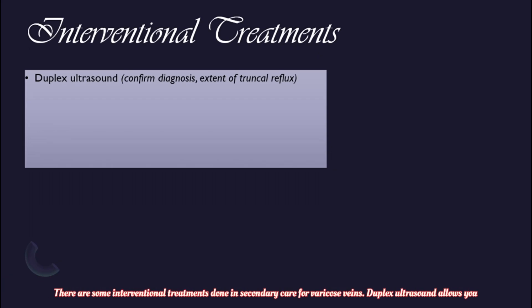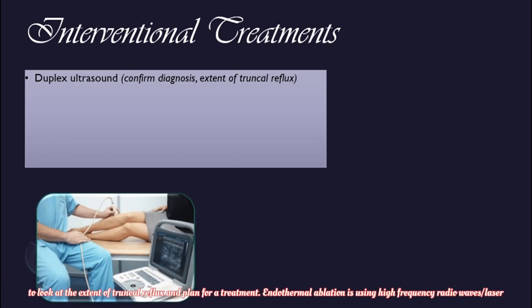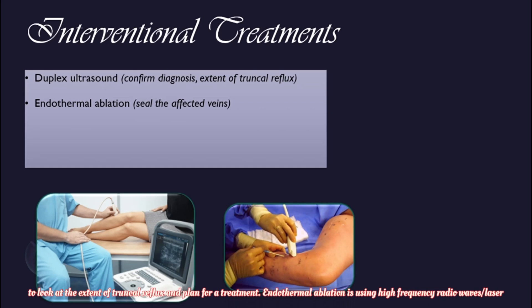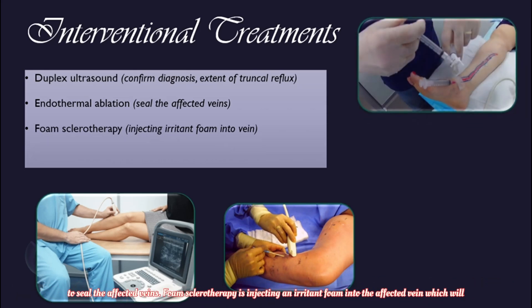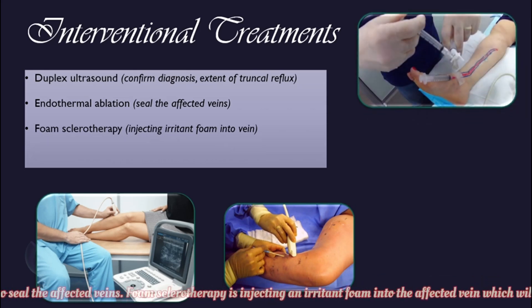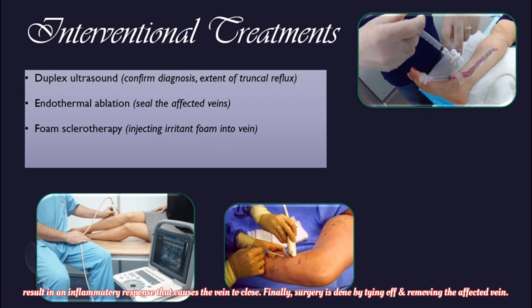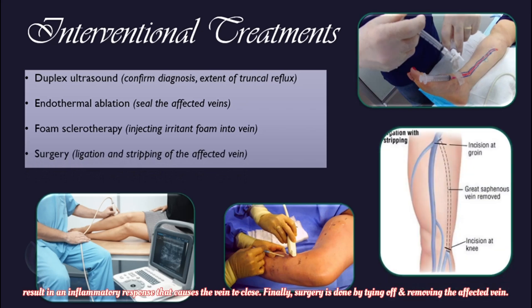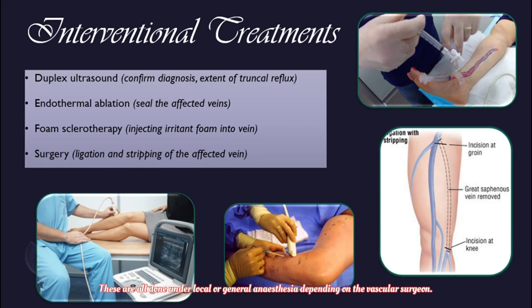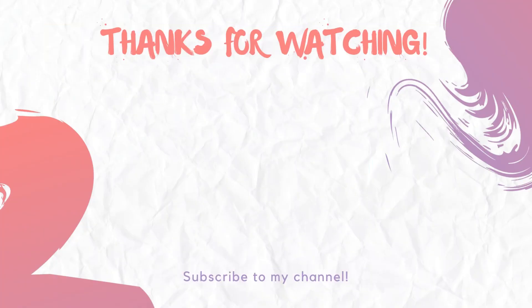There are some interventional treatments done in secondary care. Duplex ultrasound allows you to look at the extent of truncal reflux and plan for treatment. Endothermal ablation uses high-frequency radio waves or laser to seal the affected veins. Foam sclerotherapy results in an inflammatory response that causes the vein to close. Finally, surgery is done by tying off and removing the affected vein. These are all done under local or general anaesthesia depending on the vascular surgeon. Thank you so much everyone, see you in the next video!